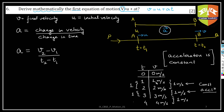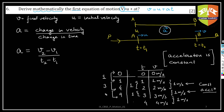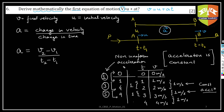Now let's say a different scenario: I draw another table where time is the same but speeds are 0, 1, 4, 9 and so on. At the end of every one second, the changes in speed are 1, then 3, then 5 — the change is not constant. It is varying every second, and hence this is the case of non-uniform acceleration.